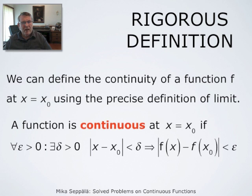The rigorous definition of continuity is the following: a function f is continuous at x equals x₀ if for any positive number epsilon we can always find a positive number delta such that whenever the absolute value of x minus x₀ is less than delta, then the absolute value of f(x) minus f(x₀) is less than epsilon.